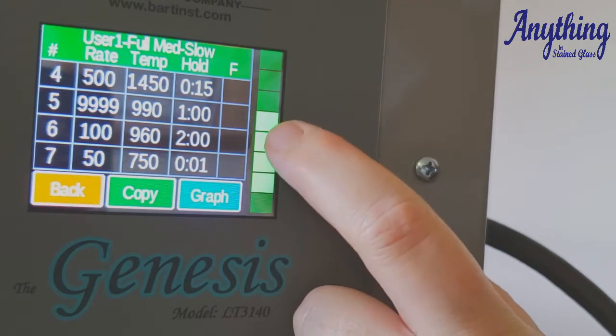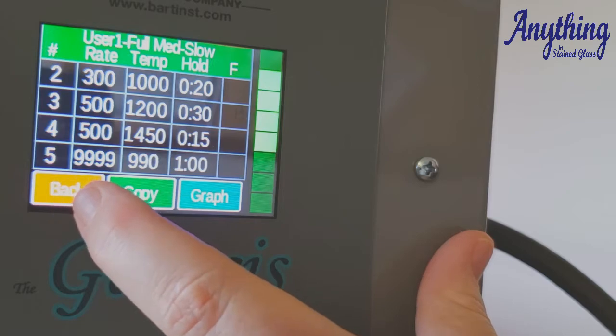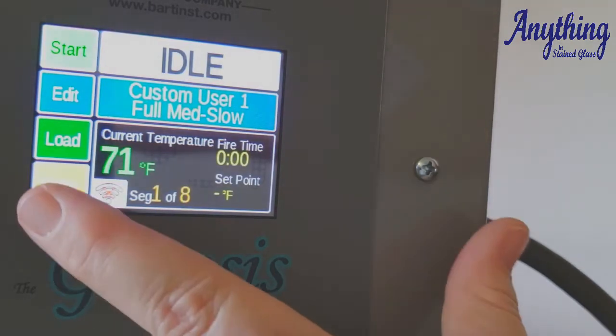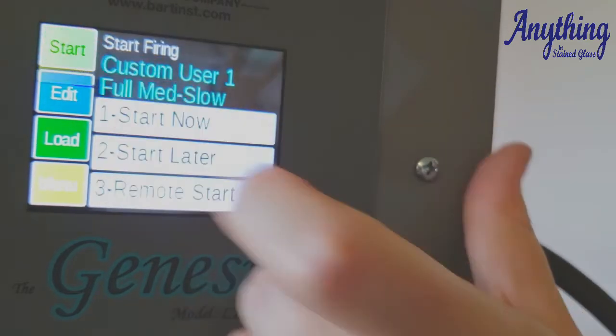And you can always check your profile. This particular program has eight segments with several different holds. You've got your two-hour hold at your anneal time. You've got several different pieces in there. So let's go back, and now we're ready to fire it. So once we're ready to fire, we press the start button.